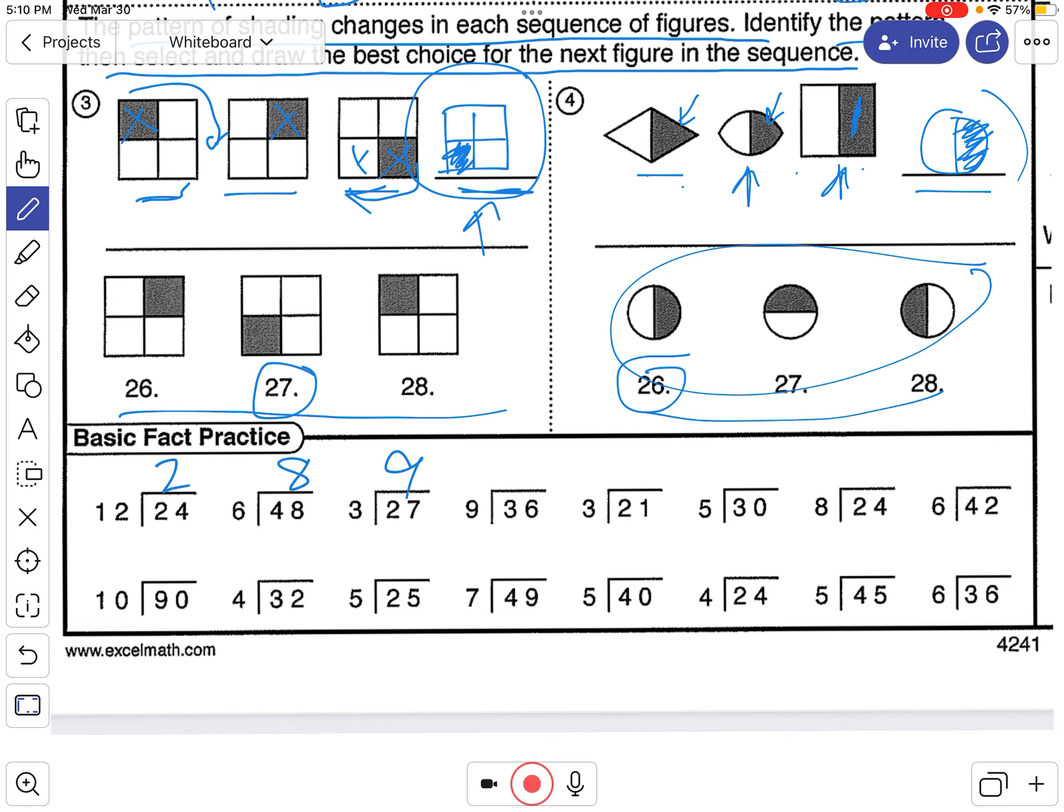6 times 8. 3 times 9. 9 times 4. 3 times 7. 5 times 6. 8 times 3. 6 times 7. Next row. 10 times 9.